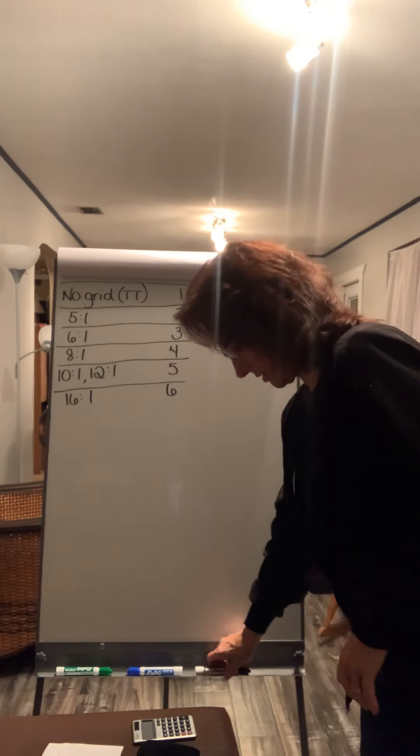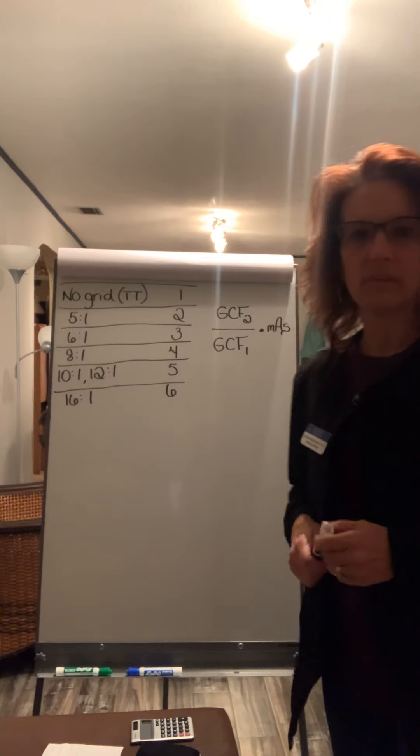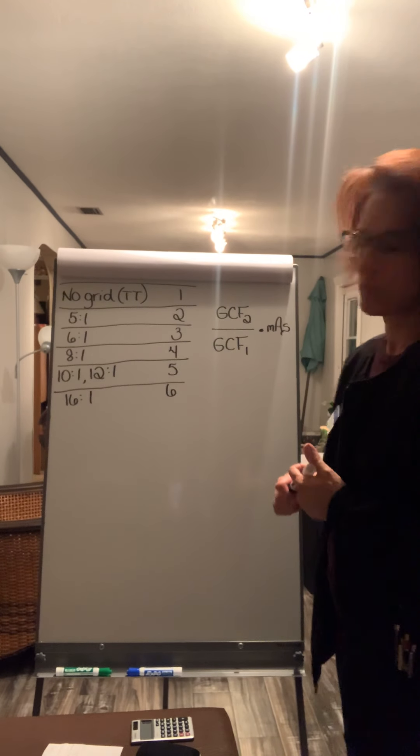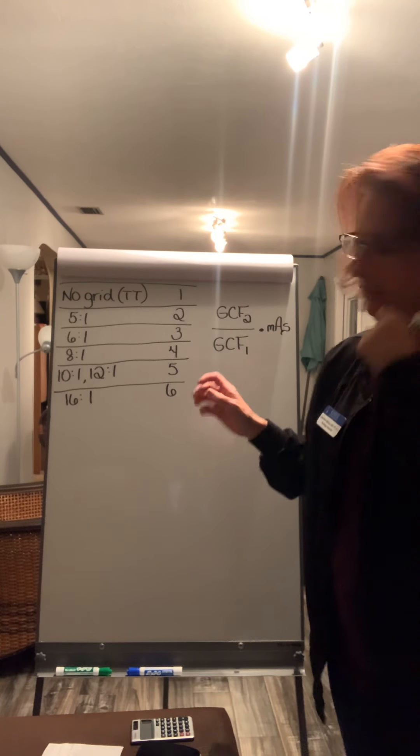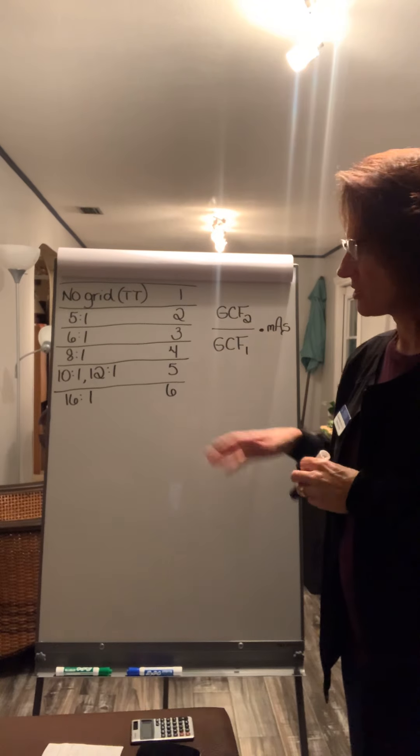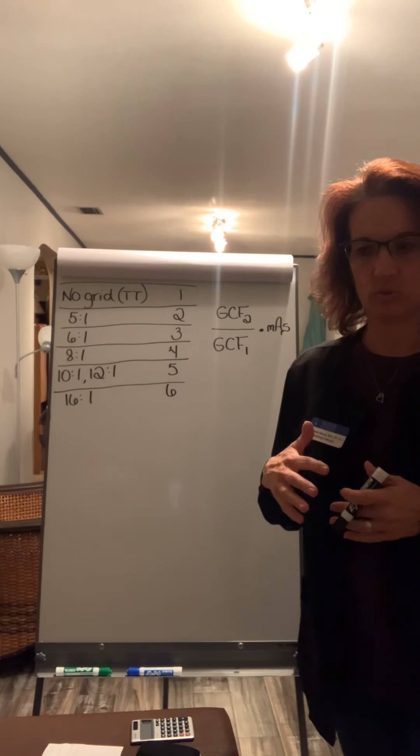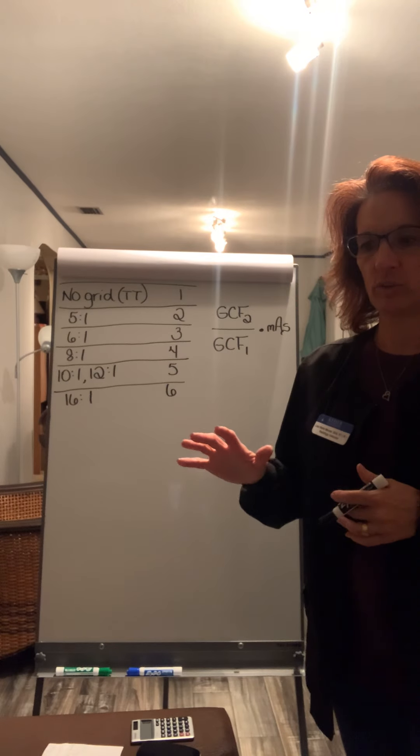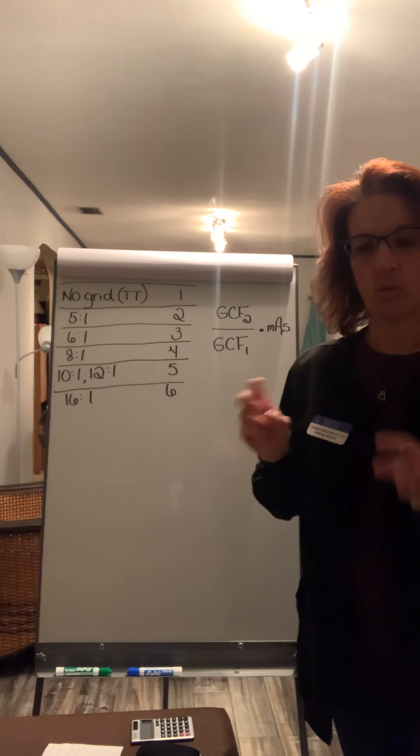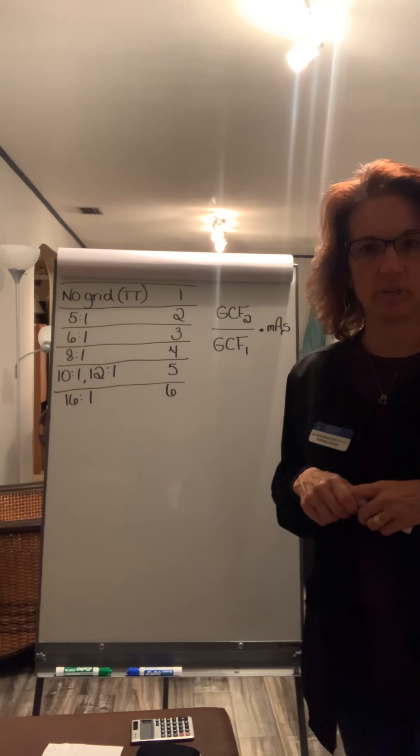All right, this is the last of the mathematical visual videos. This is on grid conversion factors and this talks about the mathematical formula you would use to convert when you're going from either no grid to a grid or when you're changing between grid ratios.